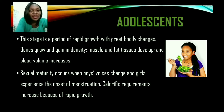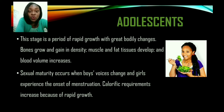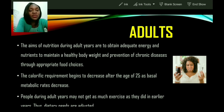Adolescence is a period of rapid growth with great bodily changes. Bones grow and gain in density, muscles and fat tissues develop, and blood volume also increases. Similarly, sexual maturity occurs — boys' voices change and girls experience the onset of menstruation. Calorific requirements increase because of this rapid growth. Adolescent females will also need iron because of the onset of menstruation, and they will also need energy-giving foods, foods rich in protein, vitamins, minerals, and carbohydrates.